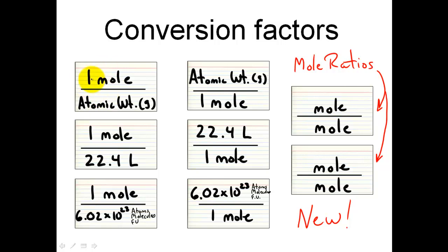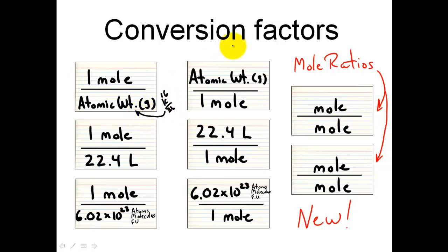We've already learned that one mole has a certain amount of atomic weight, and you get that number from the periodic table. For oxygen, the atomic weight is 16. If the molecule is O₂, then it's 16 plus 16, which gives 32. So the atomic weight is going to come from the periodic table — anytime I see atomic weight, I'm going to reference the periodic table.